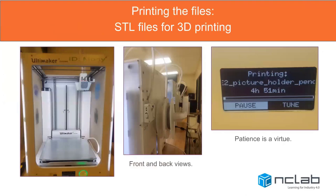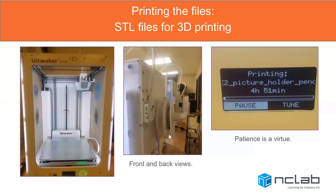Here are some pictures of the Ultimaker we used, nicknamed Morty. There's the bed it's going to be printed on, the print head which goes up and down, and on the back you can see two reels of filament that are fed into the computer. There's a readout on the front that tells you how much time you have left. Patience is a virtue — don't expect to do this in the last 15 minutes of a lesson. It's likely to run when the participants are not there, and this particular job took almost five hours.